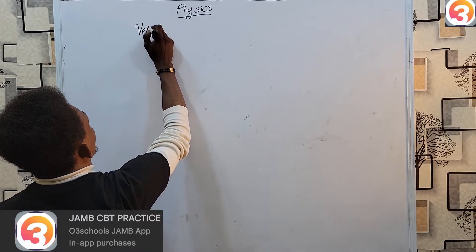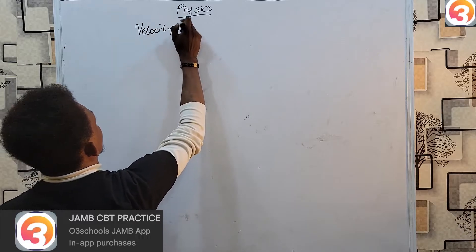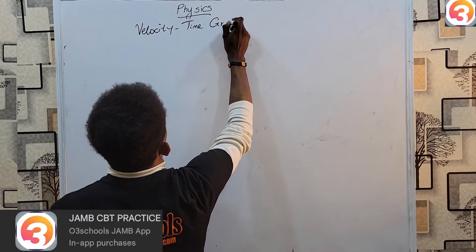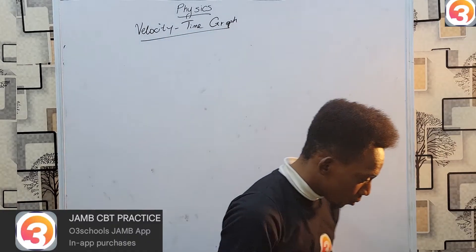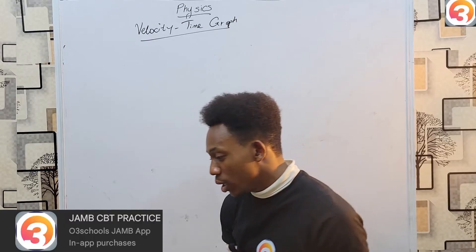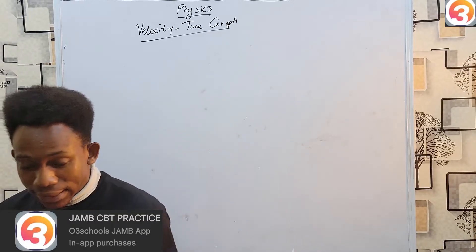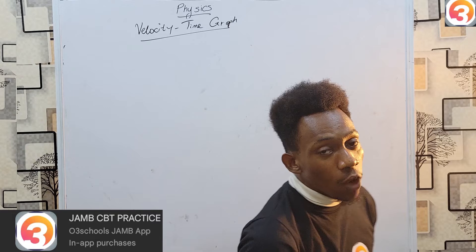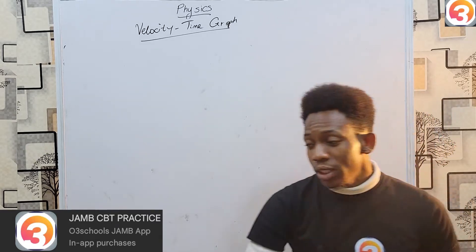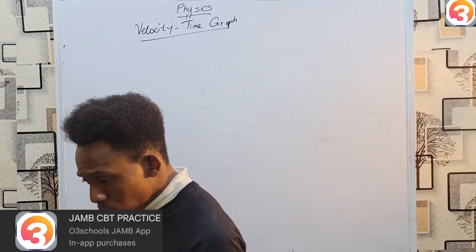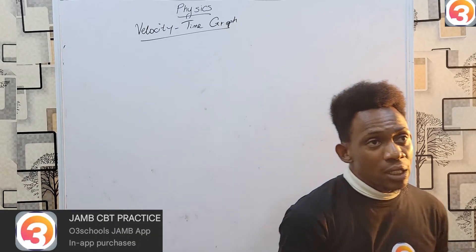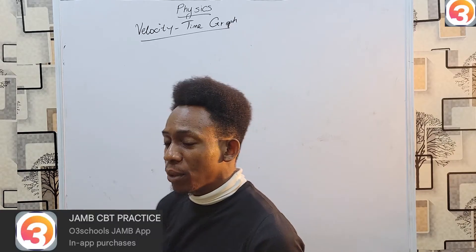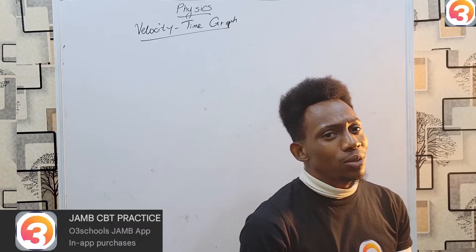We shall be looking at the velocity time graph. This is a subset of motion. Once you've learned your normal equations of motion, you'll also realize that there's now a way in which you can present motion on a graph. There are different ways motion can occur. There's uniform, there's non-uniform. We are not dealing with non-uniform here per se. Instead, we are dealing with uniform non-uniform, if that makes any sense.